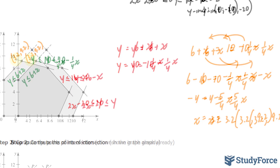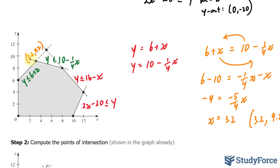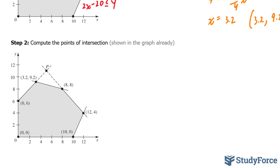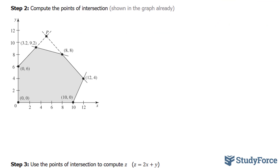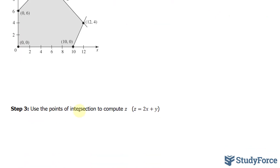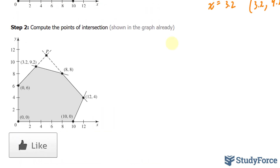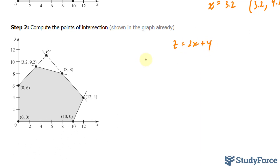Notice that this is going to take a while to do. Now that you know how to do it, here's how it would look if you do it correctly. You'll end up with all of these points of intersection. Your final step will be to use these points to compute z, where our function is z = 2x + y. I'll substitute the following 6 points.